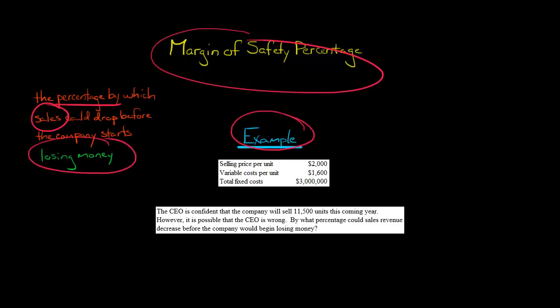Let's take an example where we have a company with one product, and the selling price per unit is $2,000. But every time it sells it, it incurs variable cost per unit of $1,600. And then we have the total fixed costs are $3 million. So we're going to need this information to calculate the margin of safety percentage.